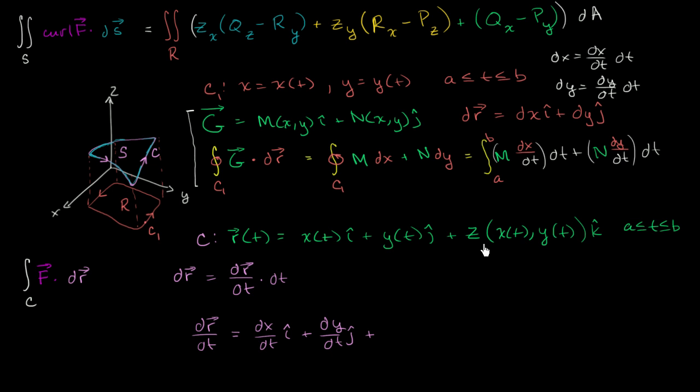So dr/dt is going to equal the derivative of x with respect to t times i, plus the derivative of y with respect to t times j. And now we're going to have to take the—because z is a function of x, which is a function of t, and z is also a function of y, which is a function of t—we're going to break out our multivariable chain rule.